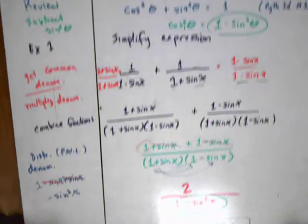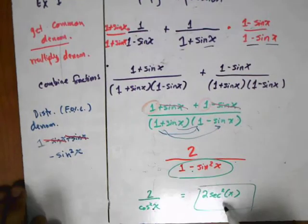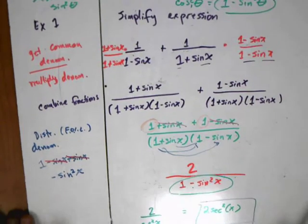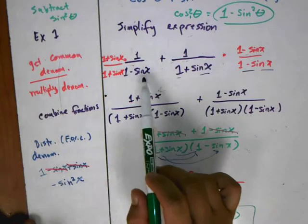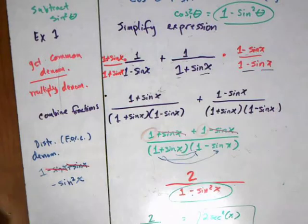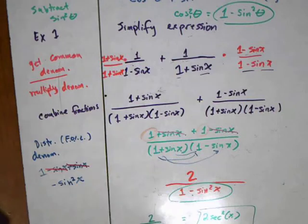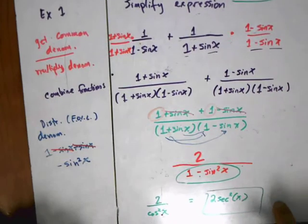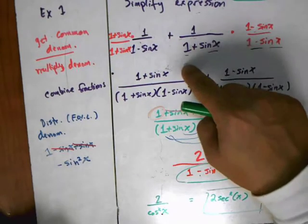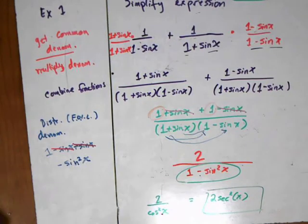You can see if you compare this expression right here, 2 secant squared x, that's significantly simpler than what we started with. This is the idea - we can simplify these expressions, and then later on when we have to solve a problem or in calculus when you have to take the derivative, it's probably easier to work with this expression than it is with the original expression.